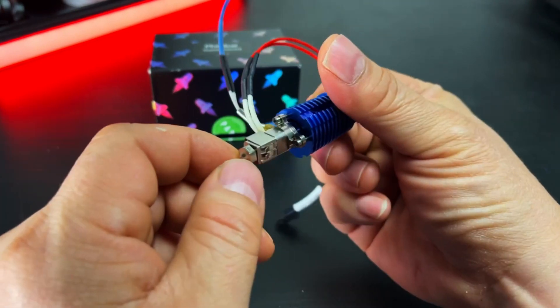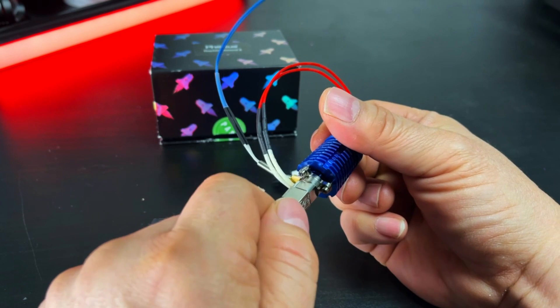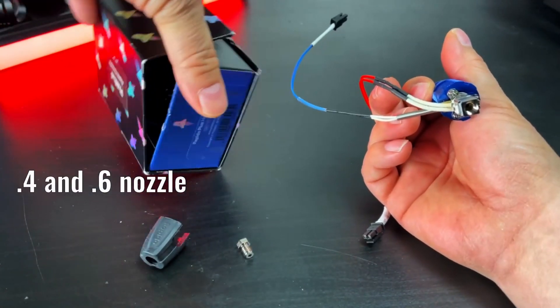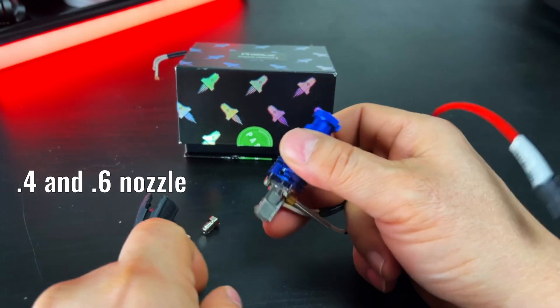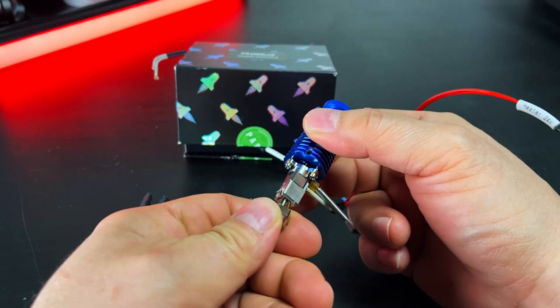The nozzle, this one here is a 0.6. It's a one-handed removable nozzle, and it comes with two nozzles. In the high-flow mode, you can actually add this to it.